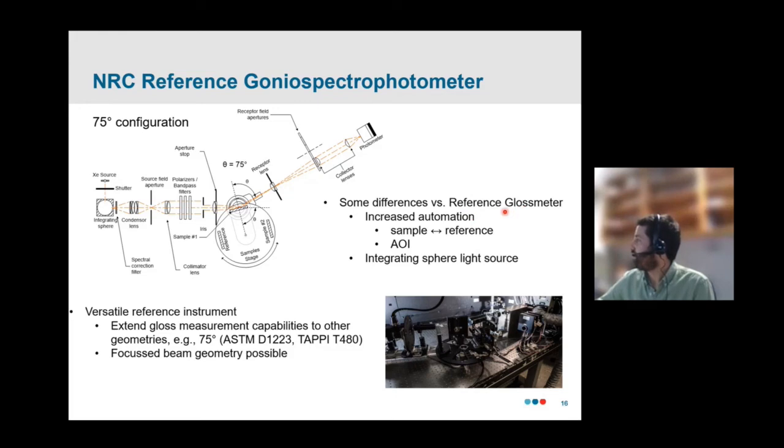It does have some differences versus the instrument I've just described to you. Being more modern, it has much better automation. So in this instrument, the sample and the reference are mounted on this turntable, which means we can interchange between the sample and reference automatically. And the device is also capable of automatically selecting the angle of incidence. So it's a big quality of life upgrade. The sample can be installed and aligned, and then we can run through gloss in many geometries in one swoop. Another technical detail that I'll just mention, it's a bit informative, is that in this case, to control the polarization of the source rather than making use of this trick of Budda's we use an integrating sphere here. And that's also very effective in depolarizing the light reaching the sample.